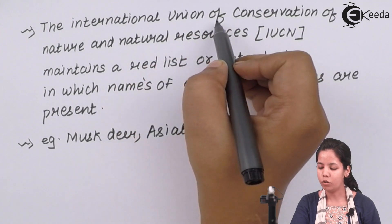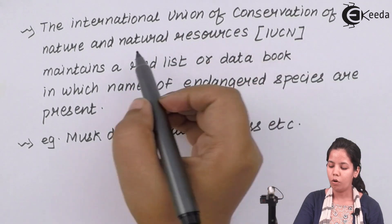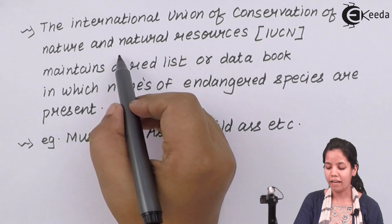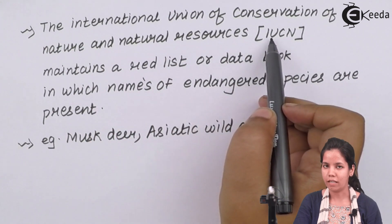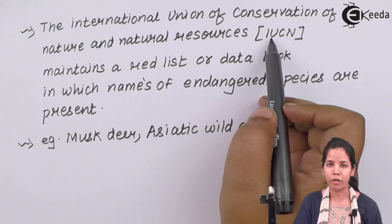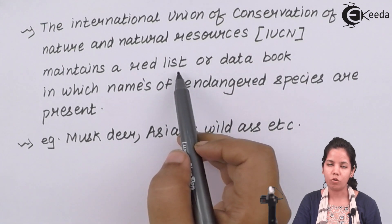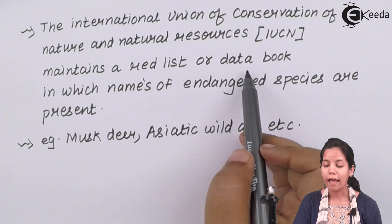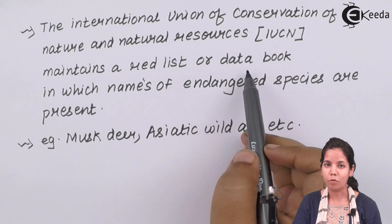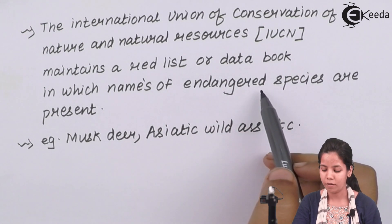The International Union of Conservation of Nature and Natural Resources, that is IUCN, a sub-body of the United Nations organization, maintains a red list or you can say a Red Data Book, and this Red Data Book has all the names of the endangered organisms.